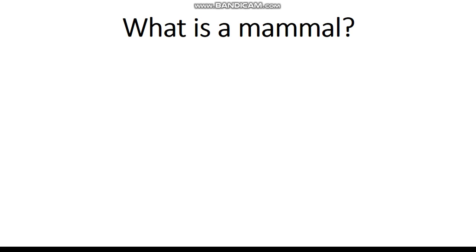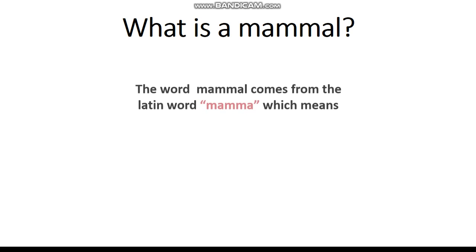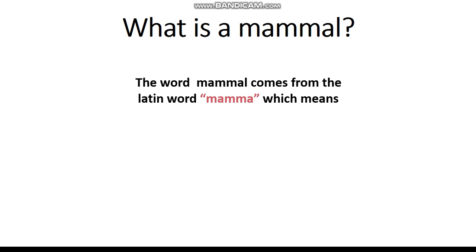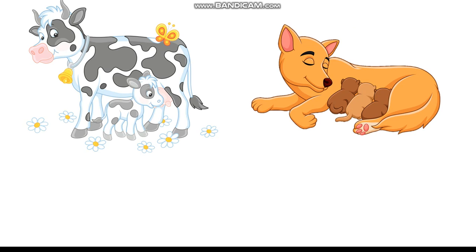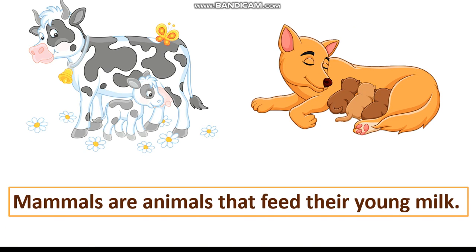Now what is a mammal? Do you know? The word mammal comes from the Latin word mama, which means milk feeder. Do you know? Like the babies, they feed on milk. Now look at these animals. They are also feeding their babies or their young ones milk. So mammals are animals that feed their young milk, like us, the humans.